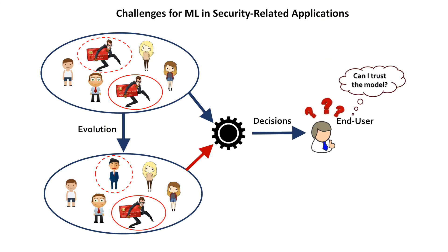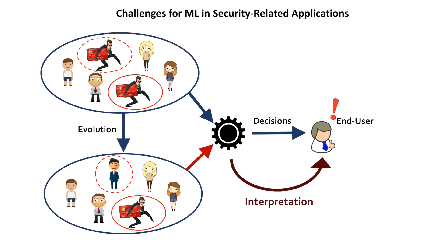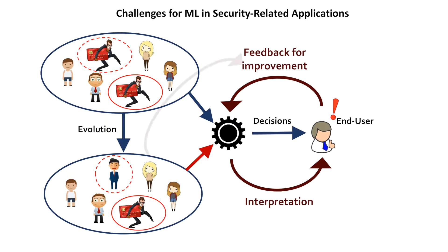What makes the situation worse is the opacity of machine learning models, where end users may not be fully informed of how models make decisions, making them hard to trust the model. If we could understand how the model works, we may be able to find its weakness. By utilizing human knowledge, we can provide feedback to the model and improve its robustness against evolving malicious instances.